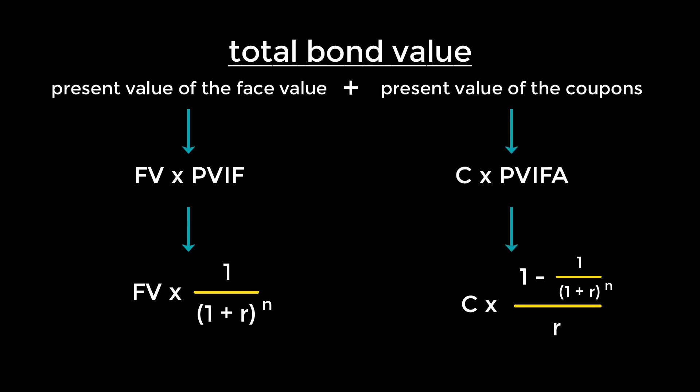The second component — the present value of the coupon payments — can be found using the present value formula for annuities, as coupon payments are regular payments of a fixed amount made until some fixed date, essentially like an annuity. Here, C is the coupon payment multiplied by the present value interest factor of annuities, or PVIFA, at rate R and periods N, adjusted for the number of payments in a year.